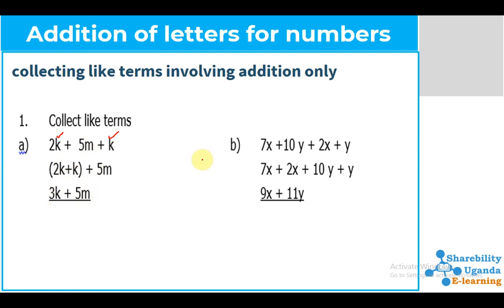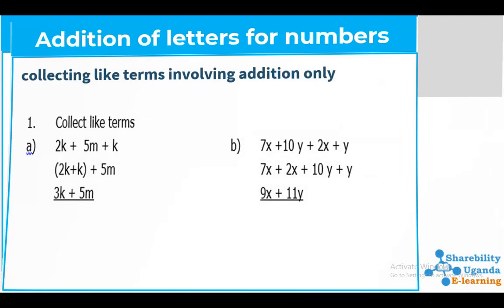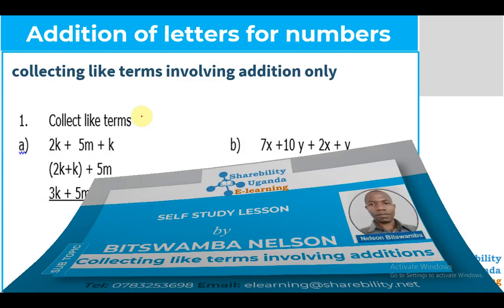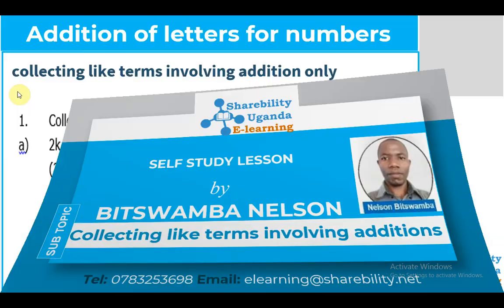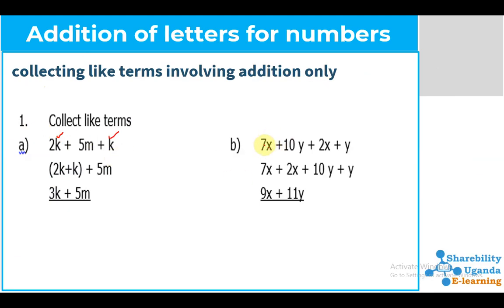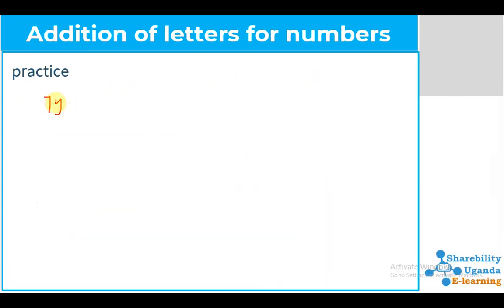We also have another example. It is 7X, then 10Y, then 2X, then Y. So our expression is 7X plus 10Y plus 2X plus Y.